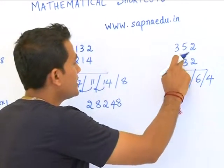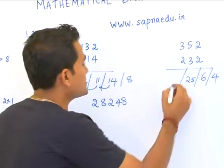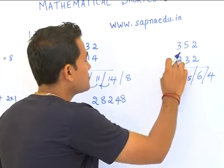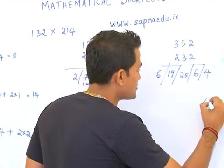So the next step is 3 into 3 is 9 plus 2 into 5 is 10. 9 plus 10 is 19. So the last step is multiplying the first two numbers. 3 into 2 is 6.